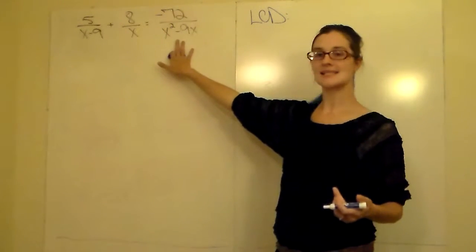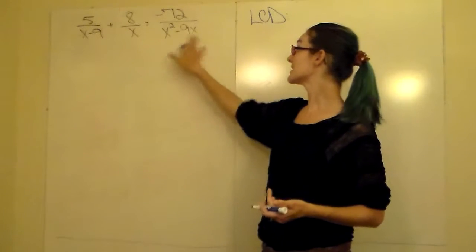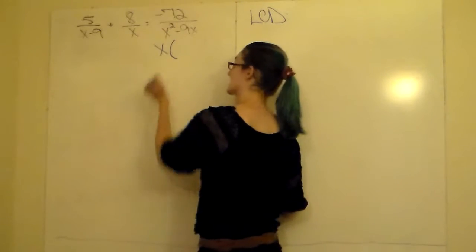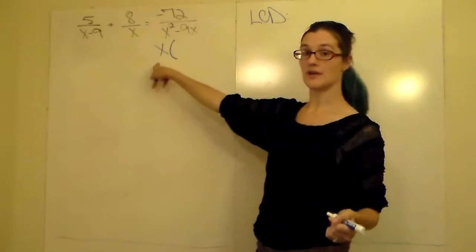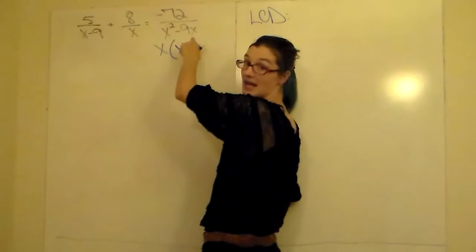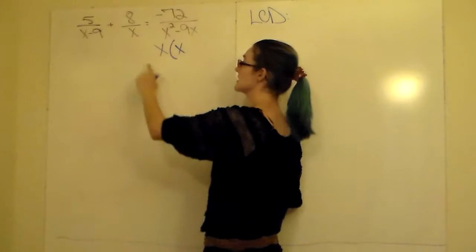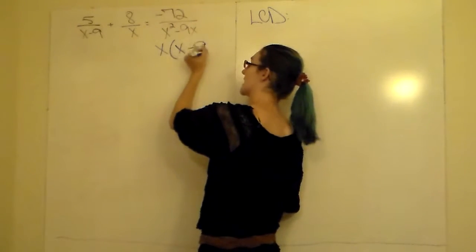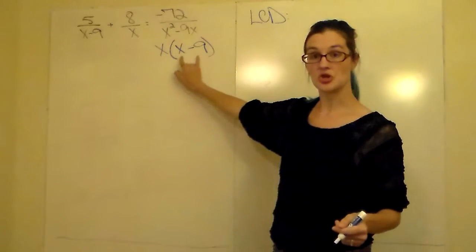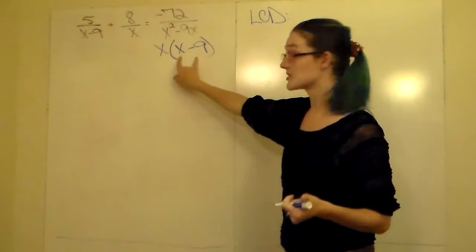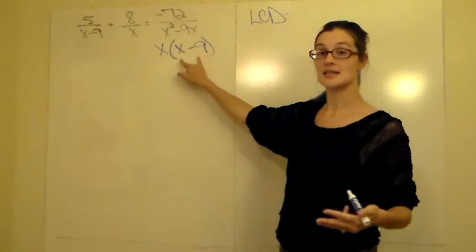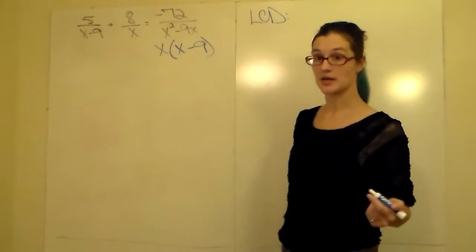x squared minus 9x. Looking at this one, there's an x in both terms, so it has a GCF of x. If I take the x out, I have x squared divided by x, that's going to leave me one x left over. Negative 9x, be careful with your signs, divided by x will leave me a negative 9. Looking at the inside is two terms. It's not the difference of squares, not the sum of squares, not the difference of cubes, not the sum of cubes. So we cannot go any farther.